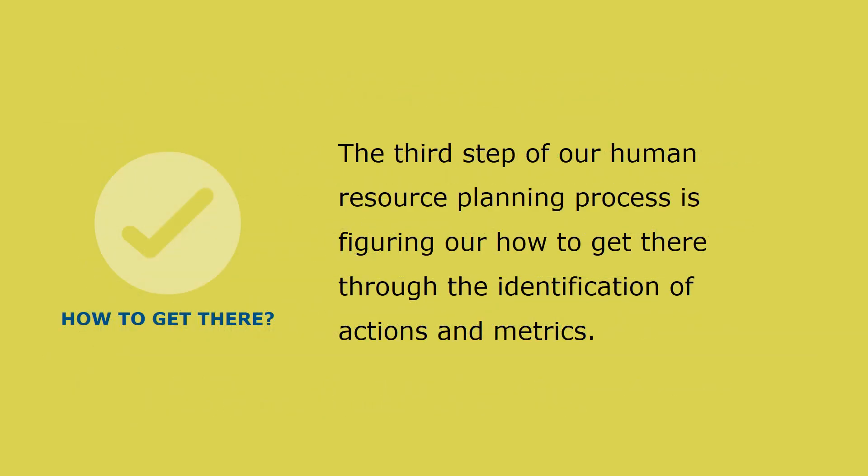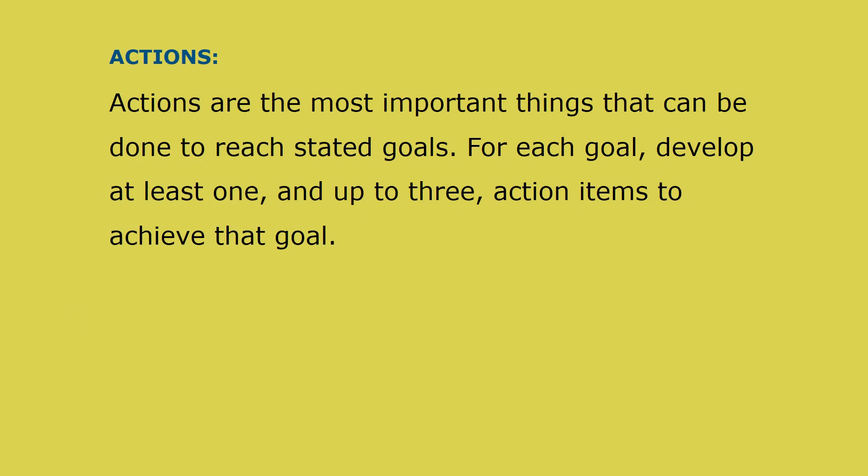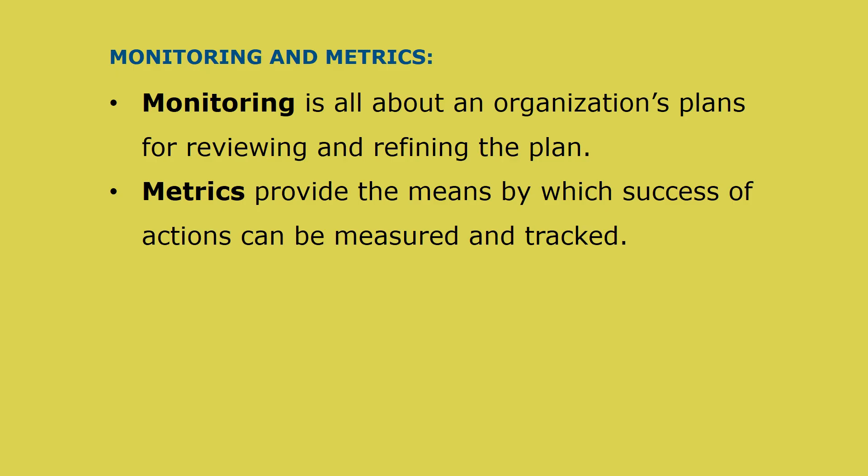The third and final step of the human resource planning process is figuring out how to get there through the identification of actions and performance metrics. Actions are the most important things that can be done to reach stated goals. For each goal, develop at least one and up to three action items to achieve that goal. Monitoring is all about an organization's plans for reviewing and refining a human resource plan. Metrics provide the means by which successive actions can be measured and tracked, clearly communicating what activities need to be done and ensuring continuous review and refinement.